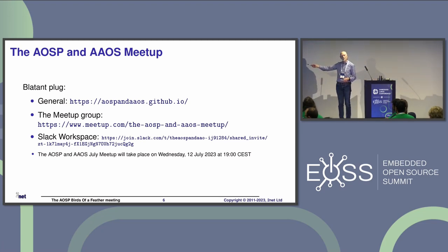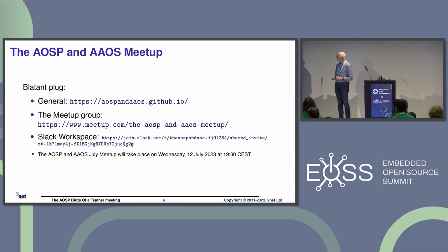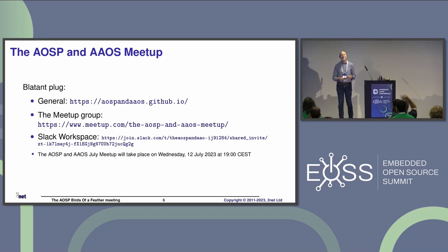I set up a Slack workspace, but turns out Slack is a really bad tool for this kind of thing. Mostly because unless you pay them big dollars, messages are deleted after 90 days, which is a bit silly. Also, the next meetup is on the 12th — only a few weeks away — and I haven't got any talks arranged, so come to me afterwards if you've got any ideas for interesting talks.